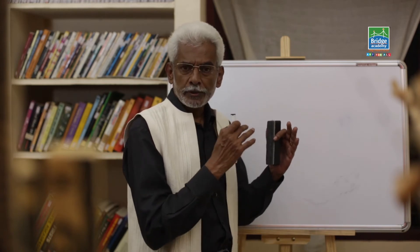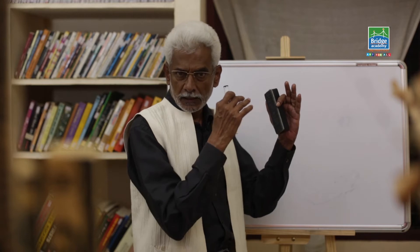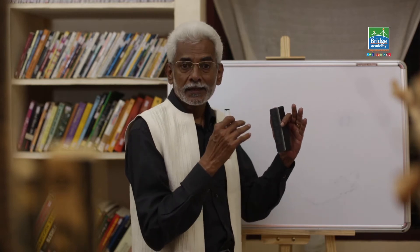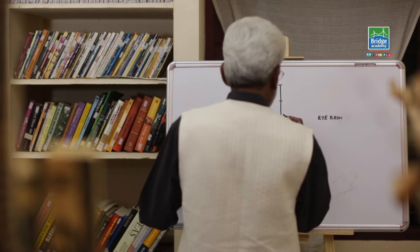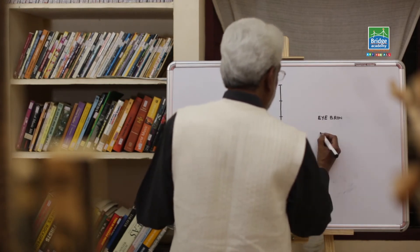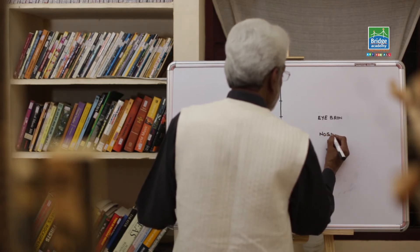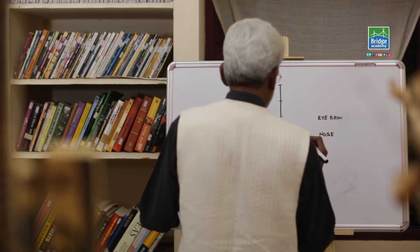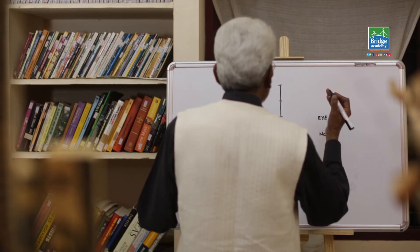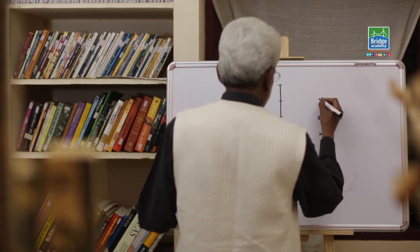Then we will go to the individual pieces, individual features and we will see how to draw that. So that is the eyebrow line. The lower quarter line is the nose line. As we said, this is just a guideline to draw a face. Depending upon the individual's face and features, the measurements will change a little bit here and there.